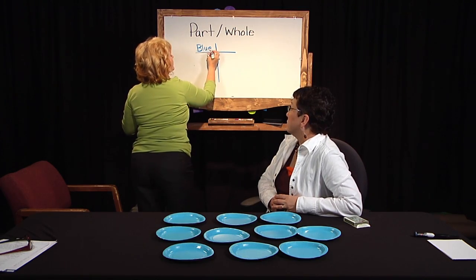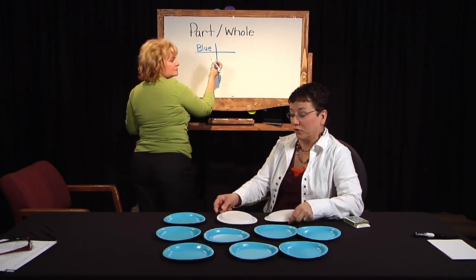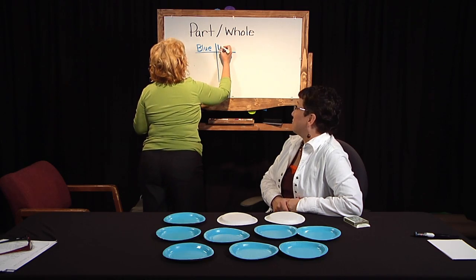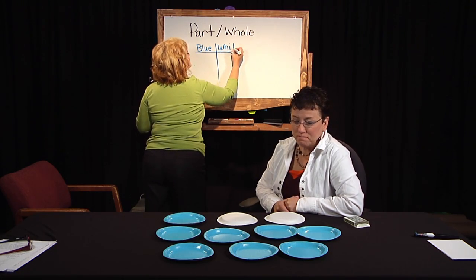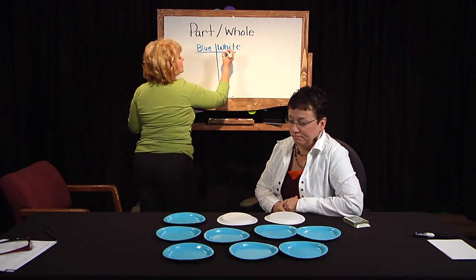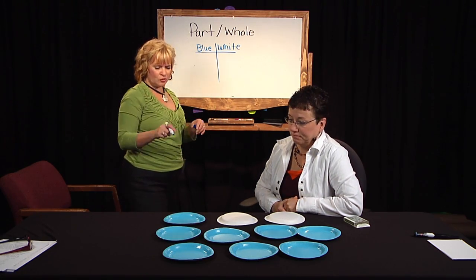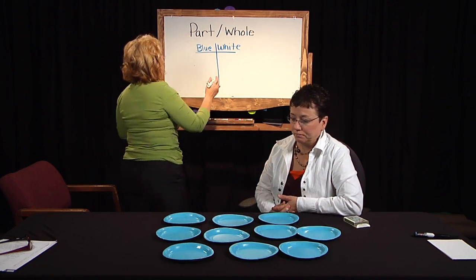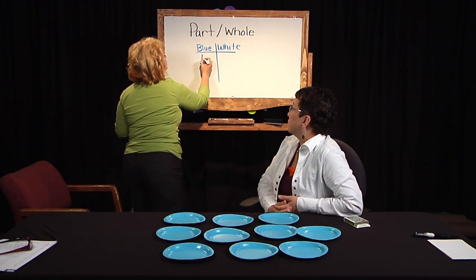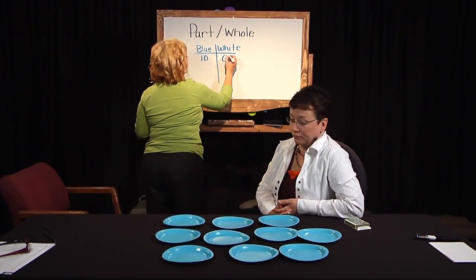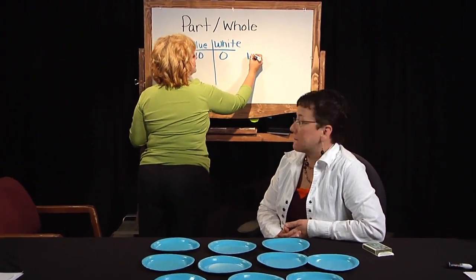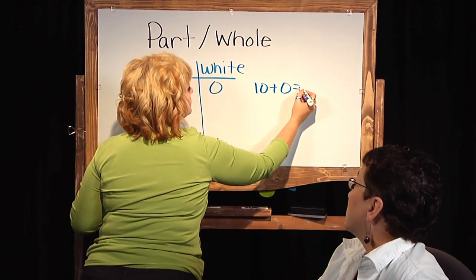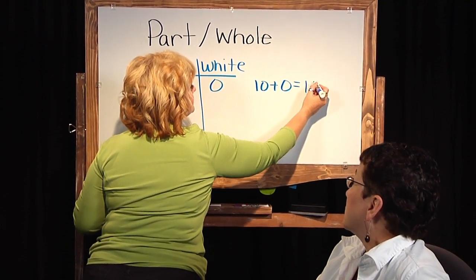Do we have any white plates? No, but if we turn them over we do — we're going to use the white on the back side. So to make ten, turn them back over so you have all blue. You had ten blue plates and no white. Or we could write a number sentence: ten plus zero equals ten.